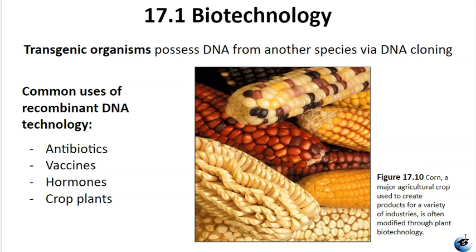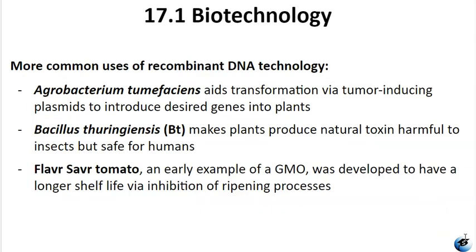Common processed foods in the U.S. such as Roundup-ready soybeans and borer-resistant corn contain GMOs. In plant biotechnology, Agrobacterium tumefaciens plays a key role in transformation of plants, possessing tumor-inducing plasmids that allow it to transfer genetic material into plant cells. Scientists can introduce desired genes like the insecticide Bacillus thuringiensis (Bt), which gives plants the ability to produce a natural toxin harmful to insects but safe for humans. Another remarkable achievement is the creation of the Flavr Savr tomato, one of the first genetically modified tomatoes developed to have a longer shelf life through the inhibition of ripening.